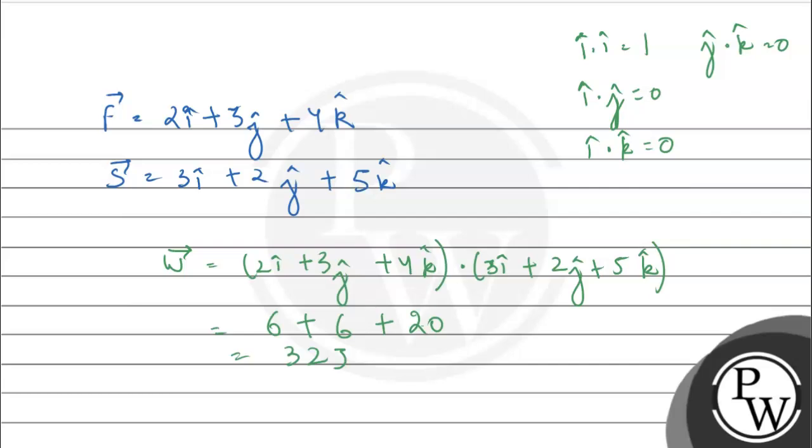So, the final answer is work done is 32 joule which is option C. Hope you understood it well. Best of luck.